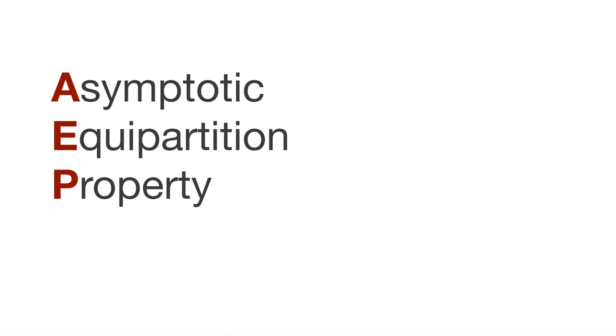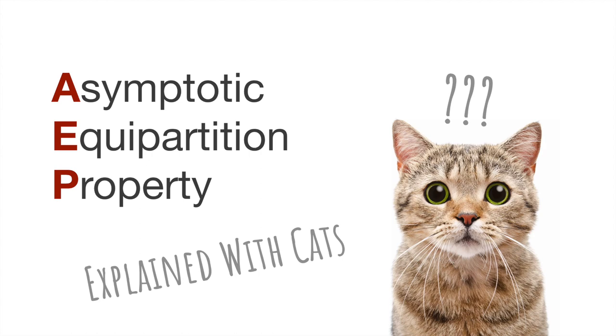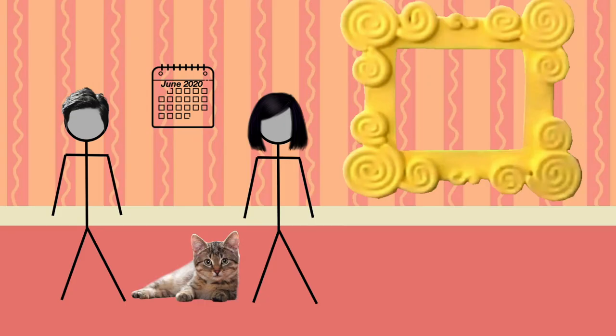Alright, today we're going to learn about the Asymptotic Equipartition Property, AEP. It's a fancy name but relies on a few familiar concepts, so we're going to make the overview as clear as possible using cats. This is part one of two videos we have about AEP. This one introduces the setup, usefulness, and meaning of the theorem without going too much into the math. Part two includes more detail.